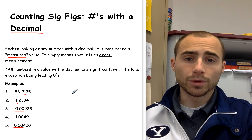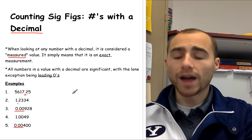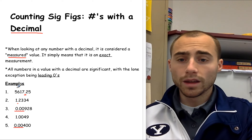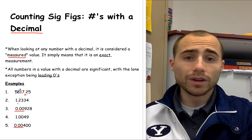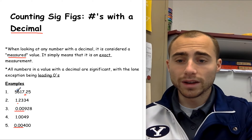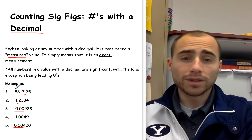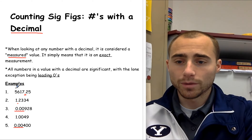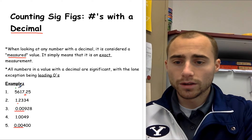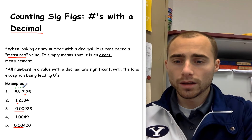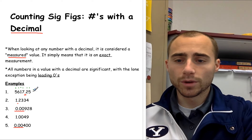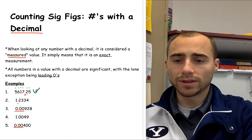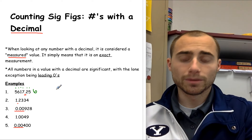Let's do five examples. The first one — counting the significant figures here, there are no leading zeros, so we simply count all the numbers: one, two, three, four, five, six. So this first number would have six significant figures.